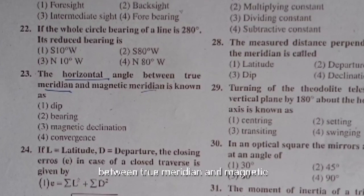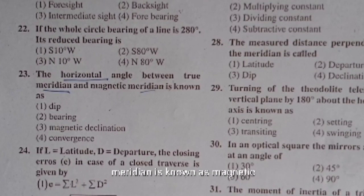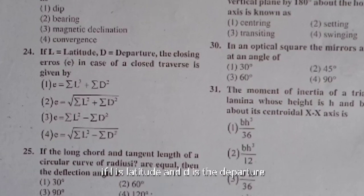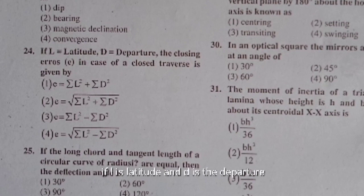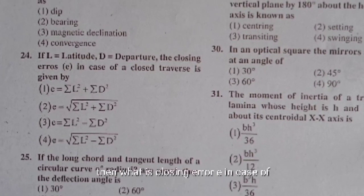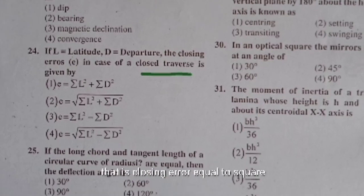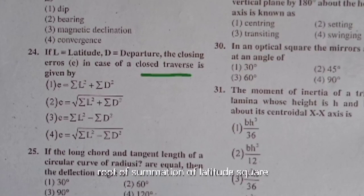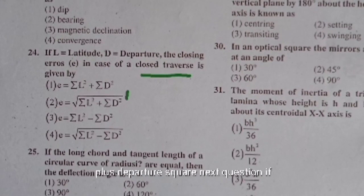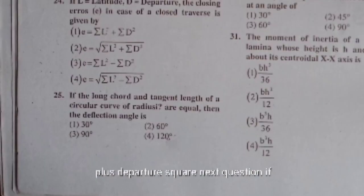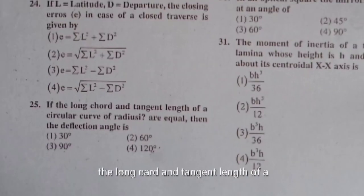The horizontal angle between the true meridian and magnetic meridian is known as magnetic declination. If L is latitude and D is departure, the closing error E in a closed traverse is given by: E = √(ΣL² + ΣD²).